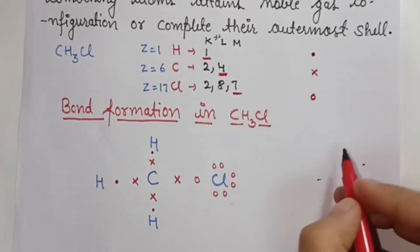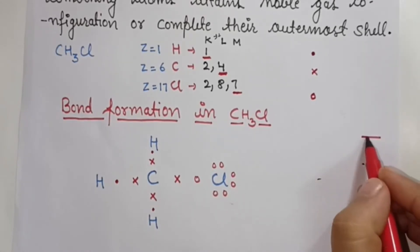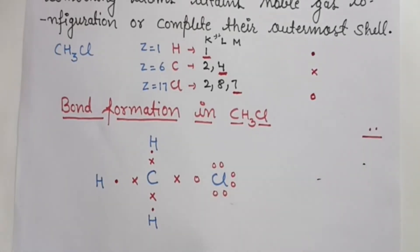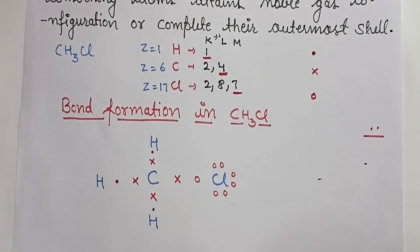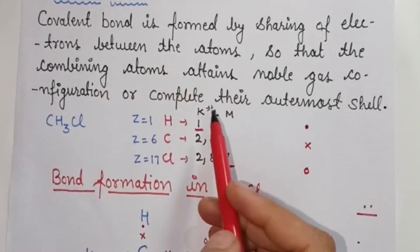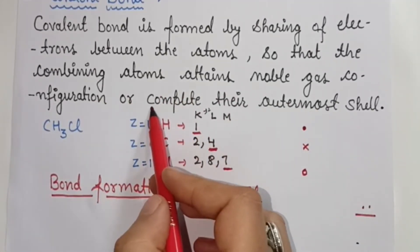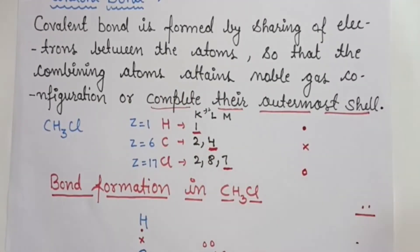In bond formation, you need 2 electrons to form a bond. And what did we say about bond formation? To complete their outermost shell, or in other words, to achieve noble gas configuration.